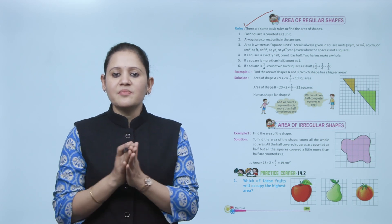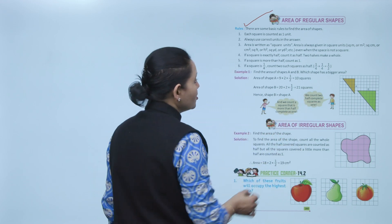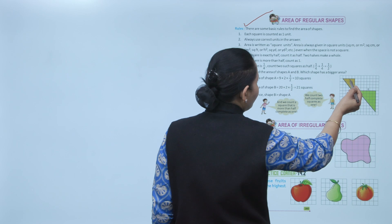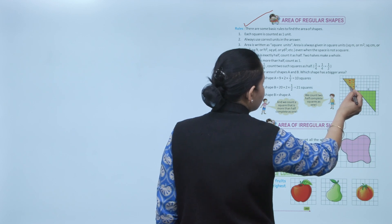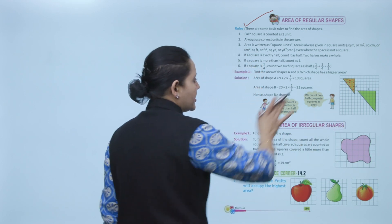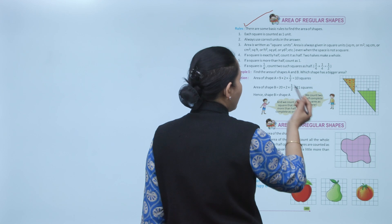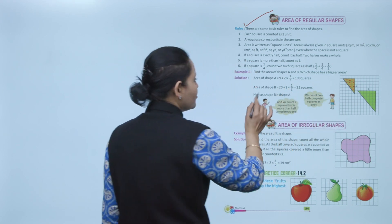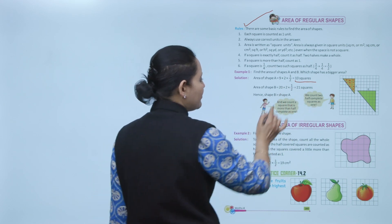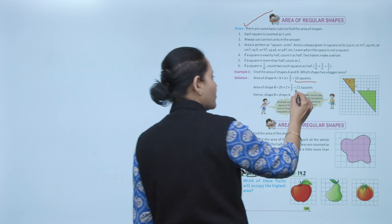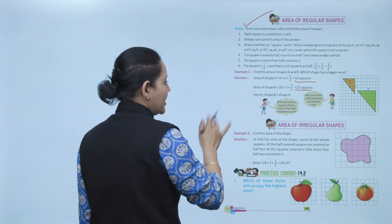Find the area of shapes A and B, and which shape has bigger area. Area of shape A: total complete squares are 9, plus more-than-half squares counted as 1 and 2, totaling 10 square units. Area of shape B: total complete squares are 20, plus half is 1, so 21 square units. So shape B has a bigger area than shape A.